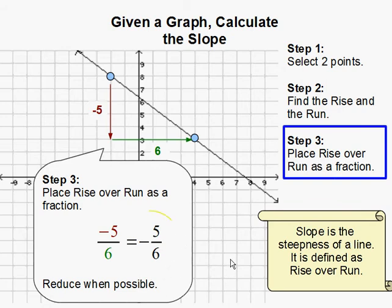So, my resulting answer is negative 5 over 6 and that is my slope. And this completes our problem.